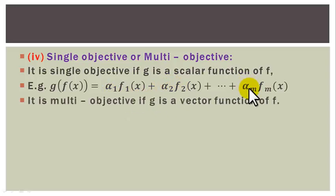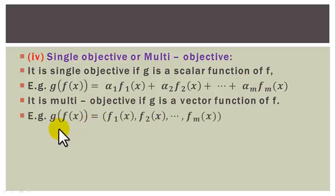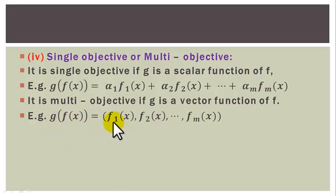And it is classified as multi-objective if G is a vector function of F. For example, G of F of X equals the vector of F_1(X), F_2(X), ..., F_m(X).